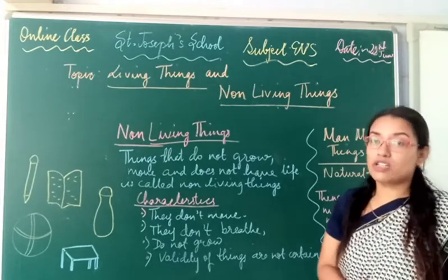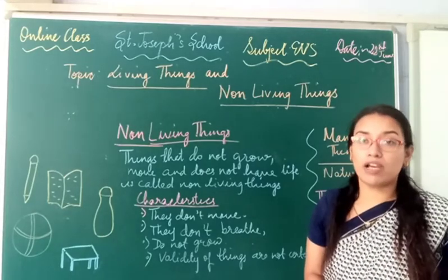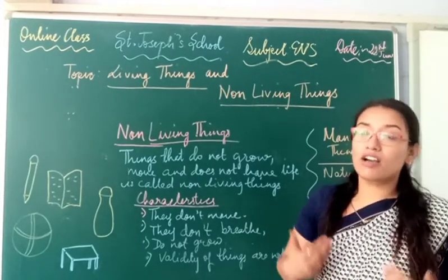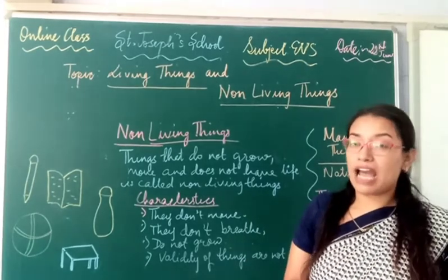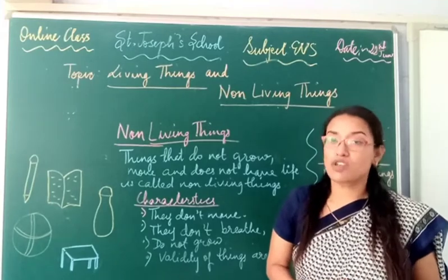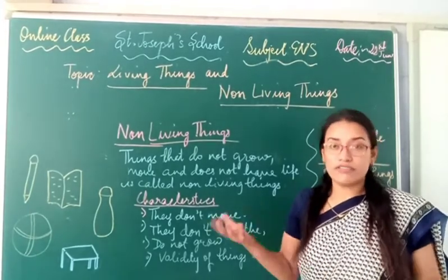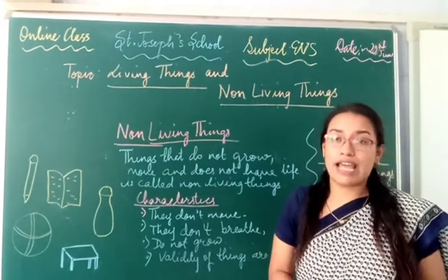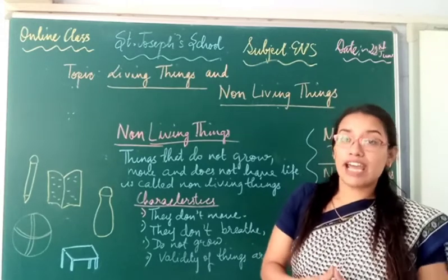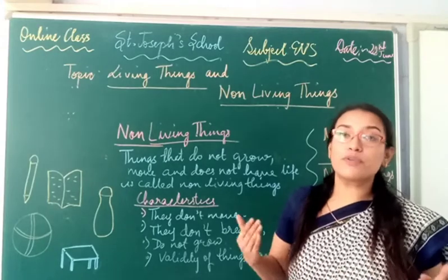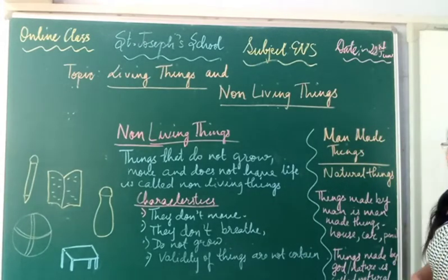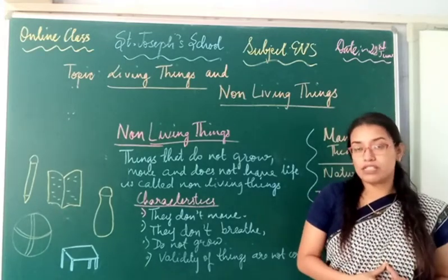Now, natural things. What are natural things? Natural things are the things that are made by God or nature. God has made different things — both living things and non-living things. God made us, God made animals, God made plants. But God also made non-living things — like land, soil, water, mountains, rivers, and even the sun. Even animals and birds have been helping nature. Whatever we get from nature — this beautiful nature, the greenery around us — that comes under natural things. For example, birds, the sun, and the blue sky are all made by nature.